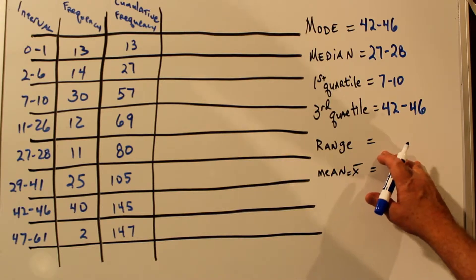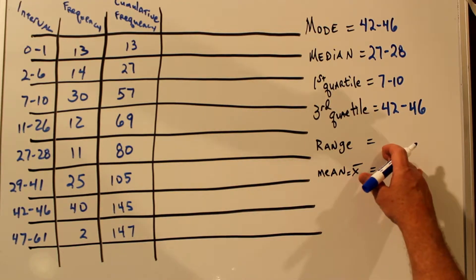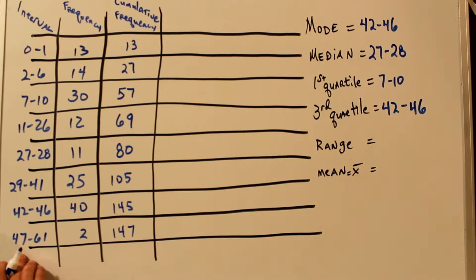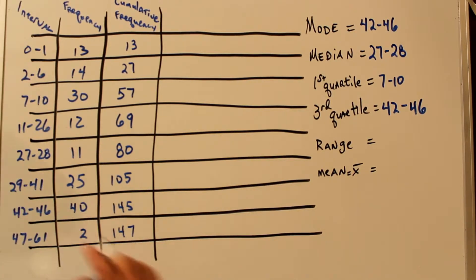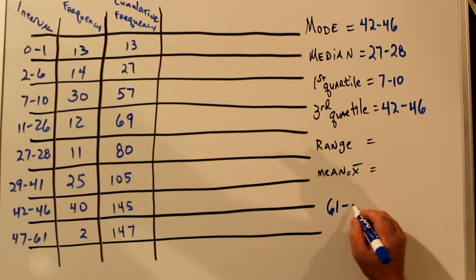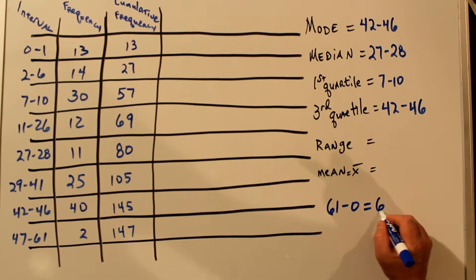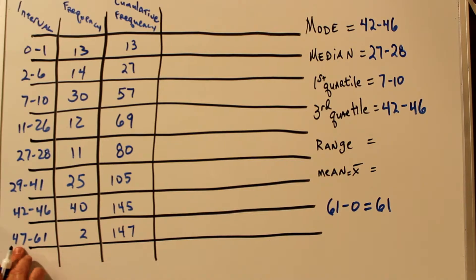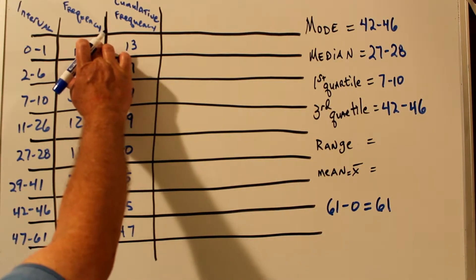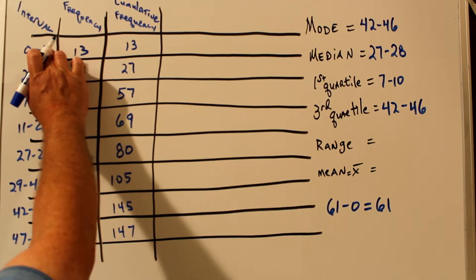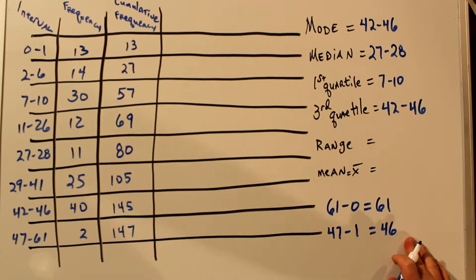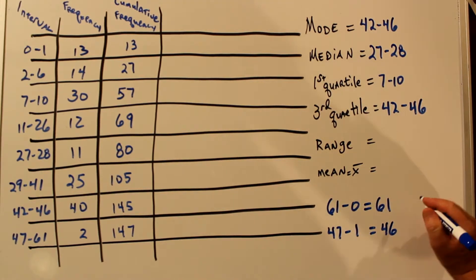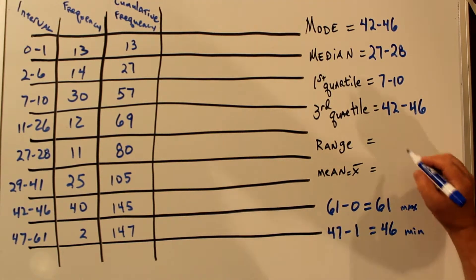To find the range, it's usually just the largest number minus the smallest number. However, we're dealing with ranges within our categories. So our biggest number that we have is 61, and the smallest number we have is zero. So let's start there. 61 minus zero is 61. But if these two data points happen to be at the lower end, if they were 47, and these 13 data points were at the higher end, if they were all ones, then our range would be 47 minus one, or 46. So our range actually has a minimum and a maximum.